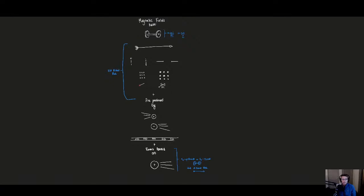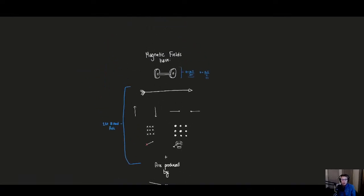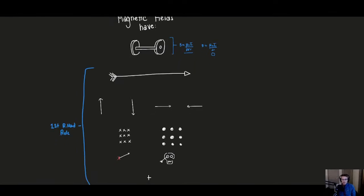We're going to start with a big picture overview of what's going on with magnetic fields — what they are, how they're produced, and at the end, what they do. Magnetic fields have strength and direction. We can describe strength using equations for different things generating the magnetic field, either a straight wire or a circular wire. They can point in three dimensions: up, down, two different sides, as well as in and out of the page. This is where we get to the first right-hand rule.